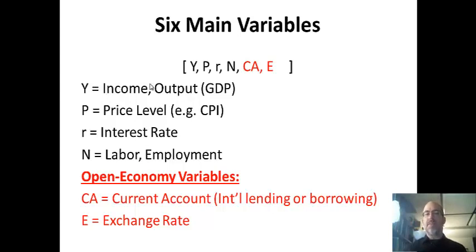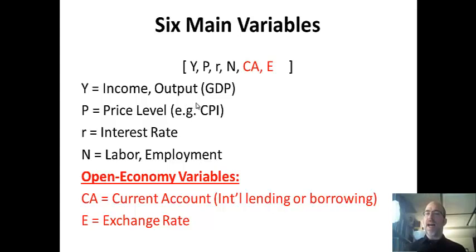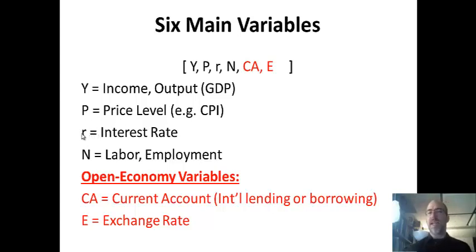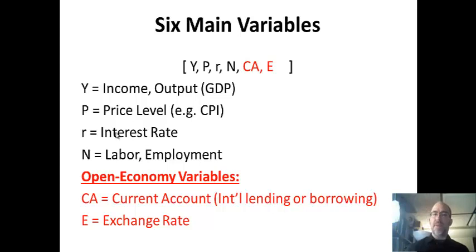Y is GDP — some sort of income or output, aggregate-level production in the economy. P is the price level, which is aggregate prices in the economy; we use something like CPI, personal consumption expenditures, or a GDP deflator. R is the interest rate — sometimes people call it I, but I call it R. That's the interest rate, which is the price of capital, and it is related to the marginal productivity of capital.